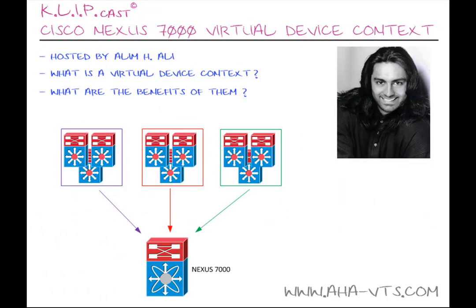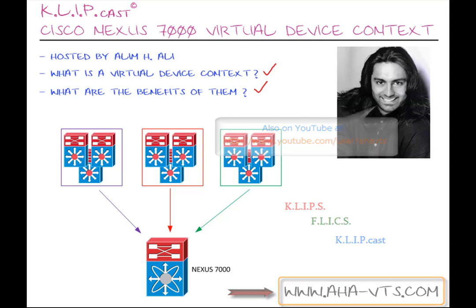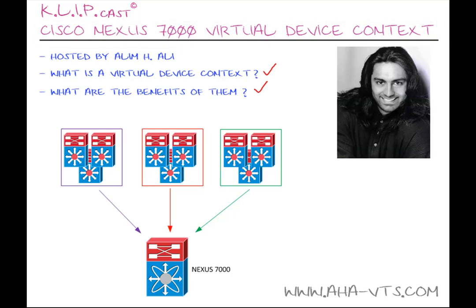It seems like Virtual Device Contexts are the next big thing in the Cisco world, and possibly for the overall data center environment. In this Clipcast, we talked about what is a Virtual Device Context and the benefits with respect to the Cisco Nexus Data Center architecture. You can visit www.aha-vtis.com for more clips, flicks, clipcasts, and much more. I hope this Clipcast on Cisco Nexus 7000 Virtual Device Context was enjoyable, and I'd like to thank you for viewing.